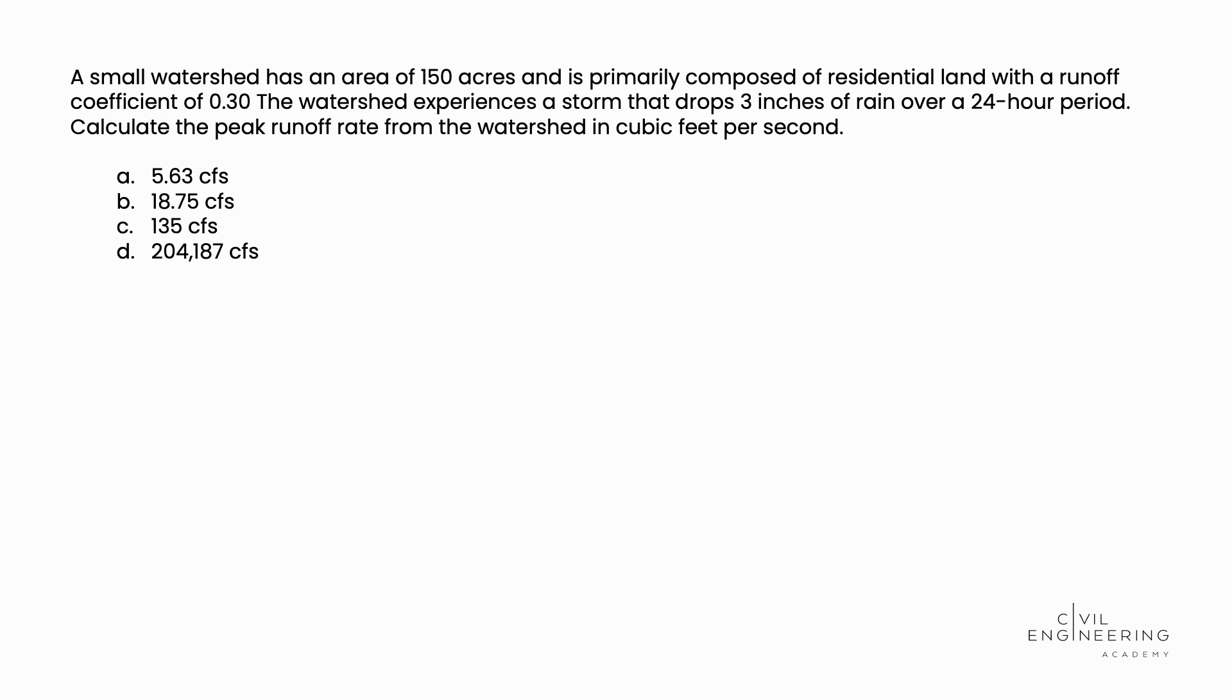To solve this problem, we're going to use the PE Reference Handbook, specifically the Water Resources section, and look at the Rational Formula. The Rational Formula is Q equals C, the runoff coefficient, times I, the rainfall intensity, times A, the area. It's important to know that in this equation, the area is measured in acres.